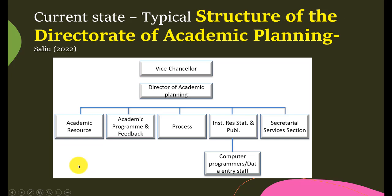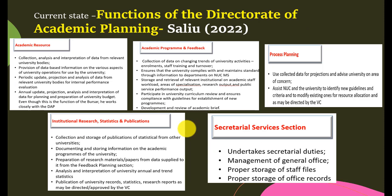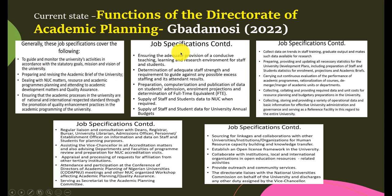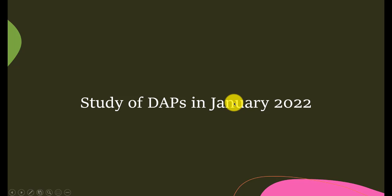Regarding the current state, what about structure? We have a structure here covering academic resource and planning. Is this structure still relevant for the future? That is what we're going to be looking at during this lesson. We're also given the functions of the Directorate of Academic Planning as you can see on screen. I conducted a study of directors of academic planning in January 2022.